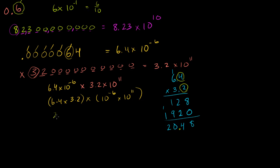So this is going to be 20.48 times 10 to the — we have the same base, so we can just add the exponents. What's minus 6 plus 11? That's 10 to the fifth power. And so this is a valid answer.